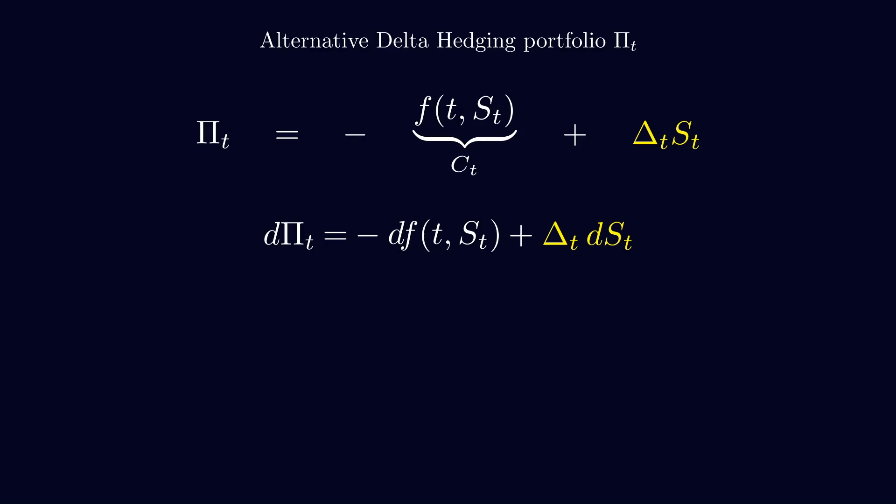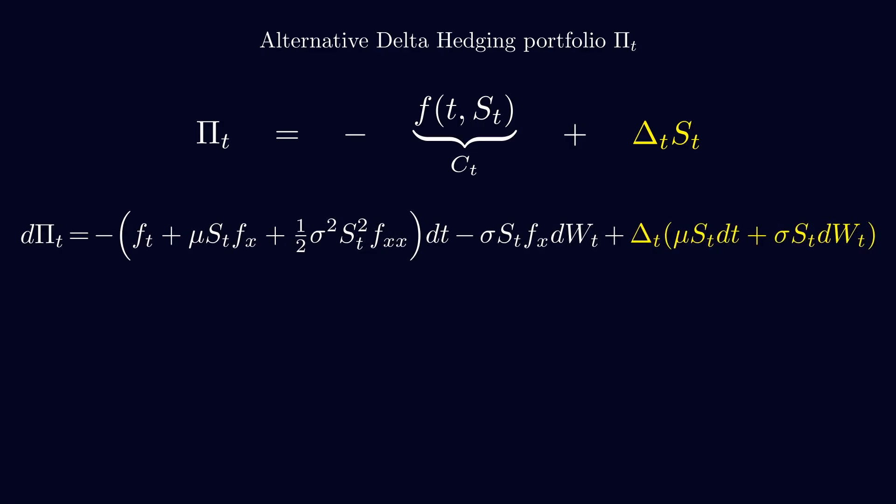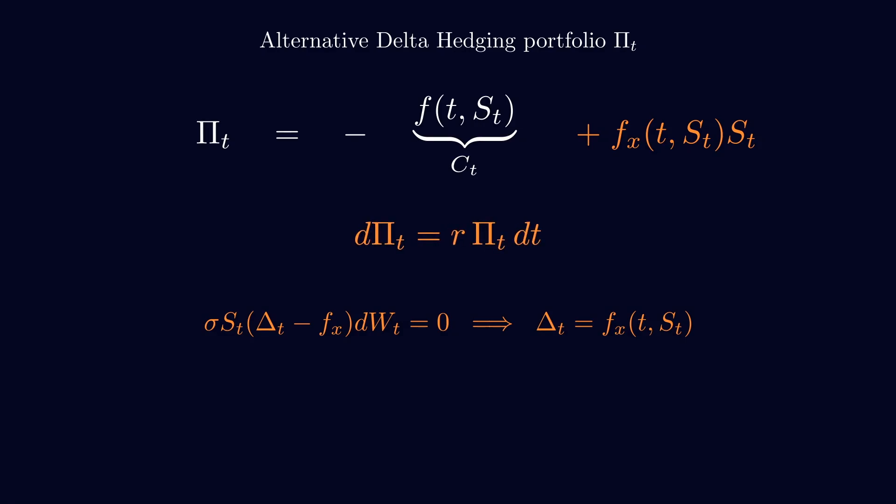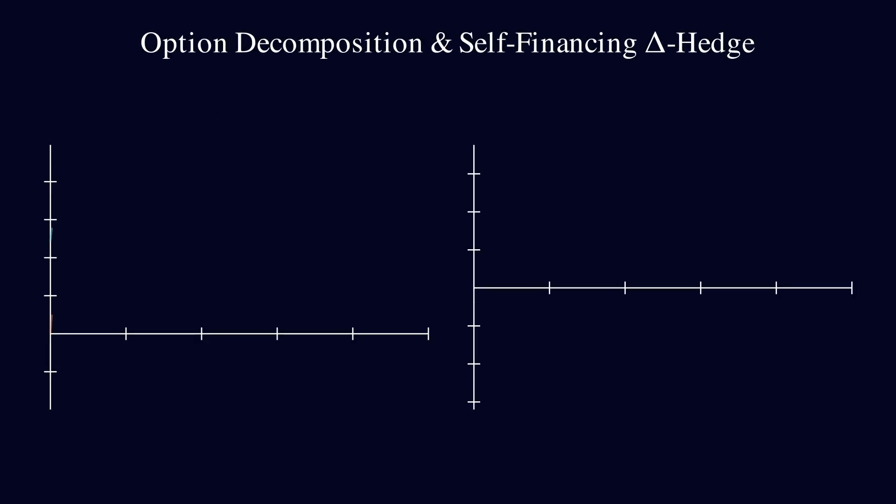To find that out, we look at how this portfolio behaves as time moves forward. We look at small changes and break them down into two parts. One part that's predictable and depend on time. That's the drift. And another part that is random and unpredictable. That's the risk, which comes from the stock's volatility. What we want is to cancel out the random part, the risk. That's the whole point of hedging. We want a portfolio that's not exposed to that randomness anymore. So, we try to find the right amount of stock, aka the right delta, that makes the risky part disappear. And when we solve for it, it turns out that the right delta is equal to how sensitive the option price is to changes in the stock price. In more technical terms, it's the derivative of the option price with respect to the stock price. But in simple terms, it's just a measure of how much the option price reacts when the stock moves.